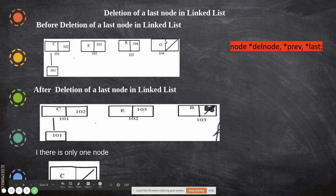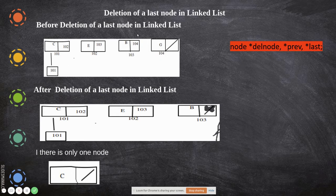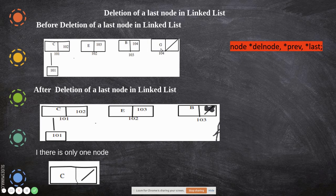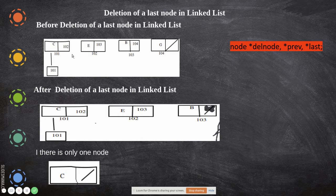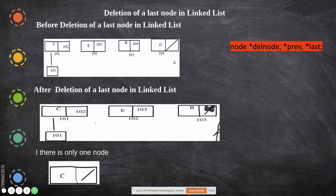The next one is deletion of a last node. Suppose I want to delete the last node. To do that, you first have to traverse to the end of the list. You can identify the last node by checking if its next field is equal to null. While traversing, you should not move the head pointer directly — you must assign a temporary variable. If you move head repeatedly, you lose access to all the nodes.